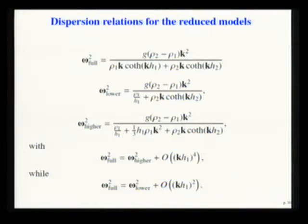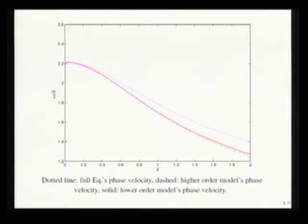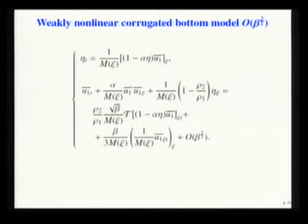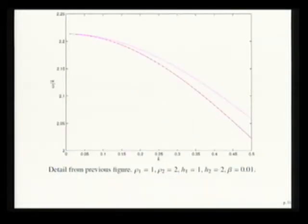The approximation is better, as seen in the plot: in red is the dispersion relation from linearization of the Euler equations; blue dashed lines are the approximation of the higher-order reduced model; and the lower-order reduced model is shown separately. For low frequencies the difference is more obvious. We can continue doing these reductions to higher and higher order.